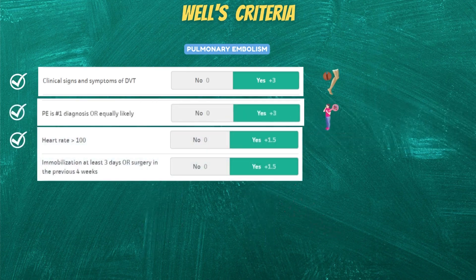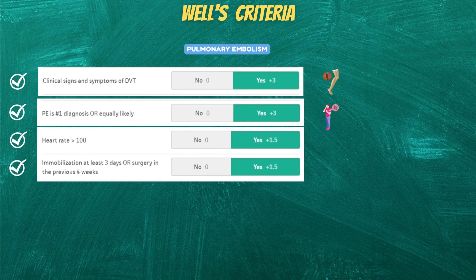Next is heart rate. If a patient has a heart rate of more than 100, it will score 1.5+. Next, immobilization for at least 3 days or surgery in the previous 4 weeks will also score 1.5+, as the development of DVT is more common during this period and is one of the high risk factors after surgery.